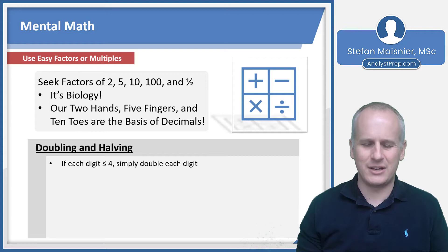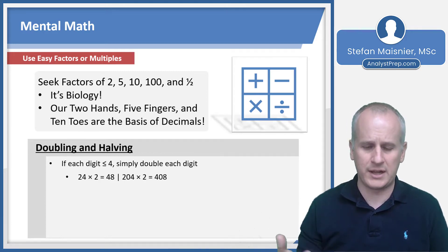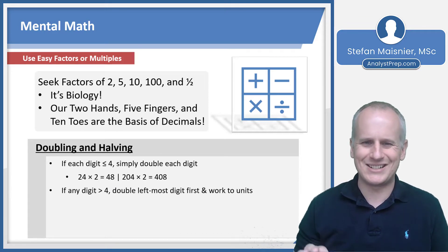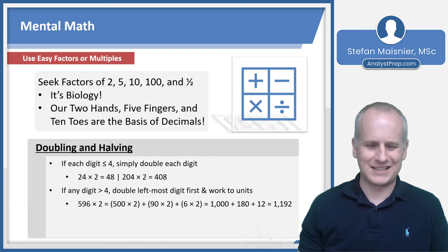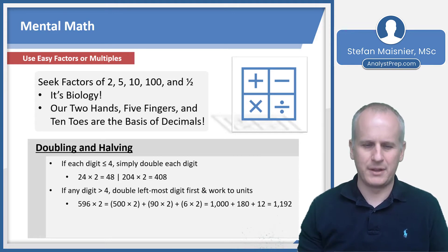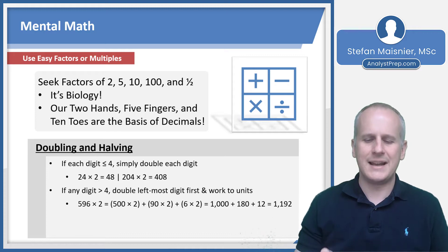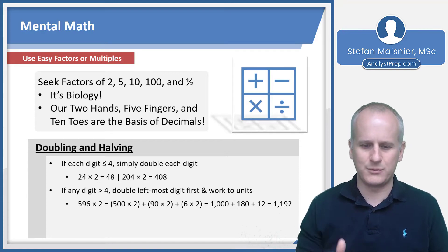A lot of that starts with just doubling and halving values. If each digit is less than or equal to 4, you can simply double each digit. For instance, 24 times 2, you just double the 2, get to 4, double the 4, get to 8, that's 48. 204 times 2 is just going to be 408 because I double the 2 in the hundreds digit up to 4 and double the 4 up to 8. But if you have a digit that's greater than 4, you want to double the leftmost digit first and then work to your units digit. For instance, 596 times 2, we've got digits greater than 4, so we'll start by just doing 500 times 2, then 90 times 2, then 6 times 2. We just sum all of those values individually: 1,000 plus 180 is 1,180 plus 12 is 1,192.